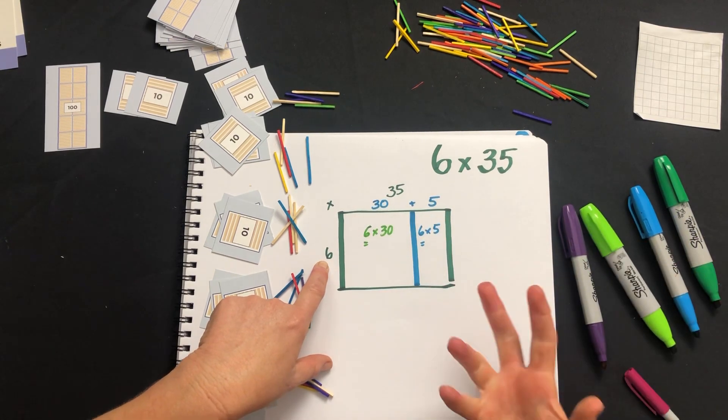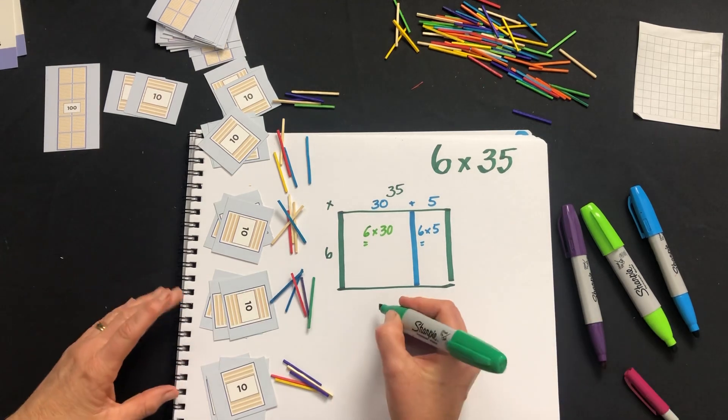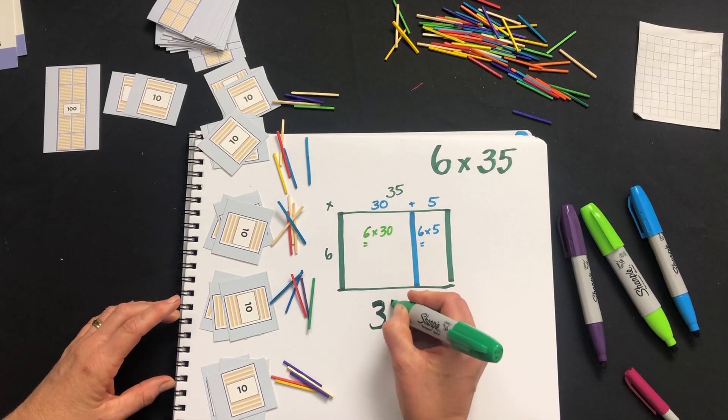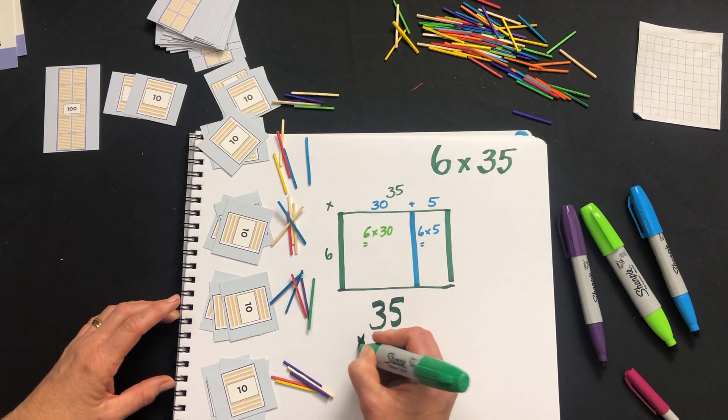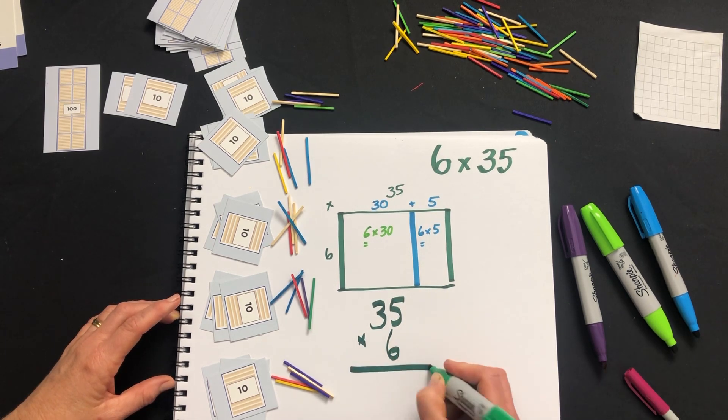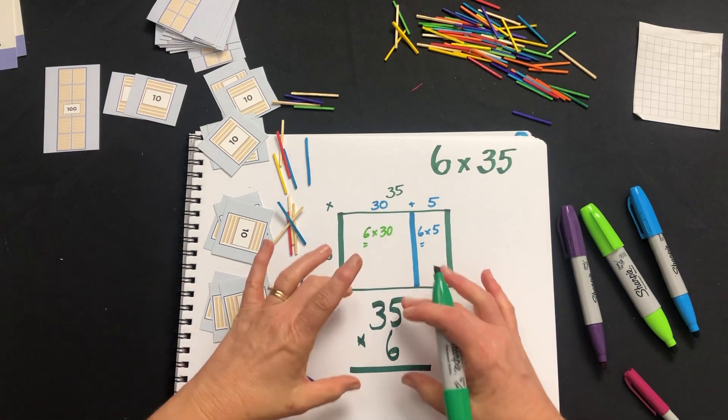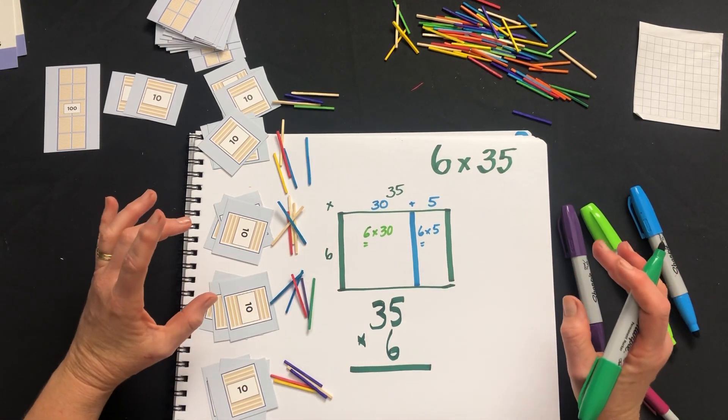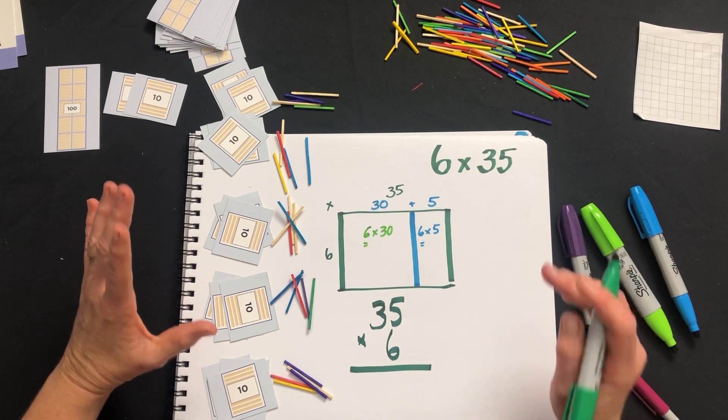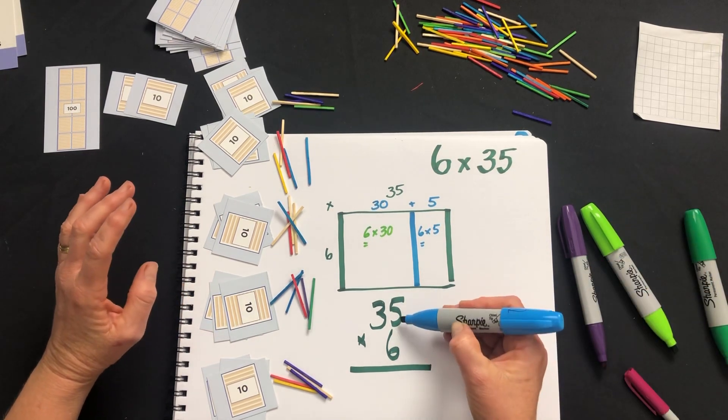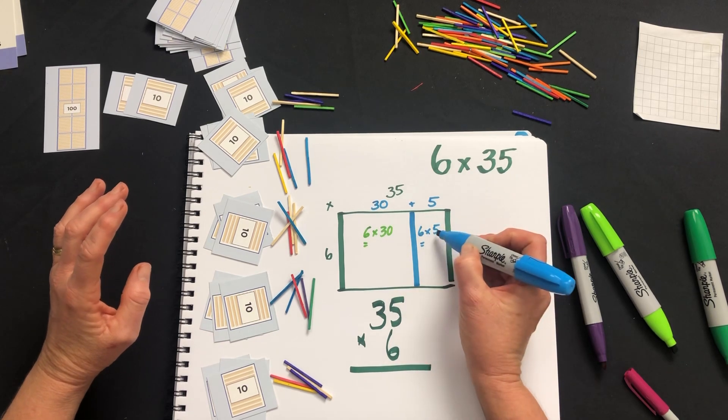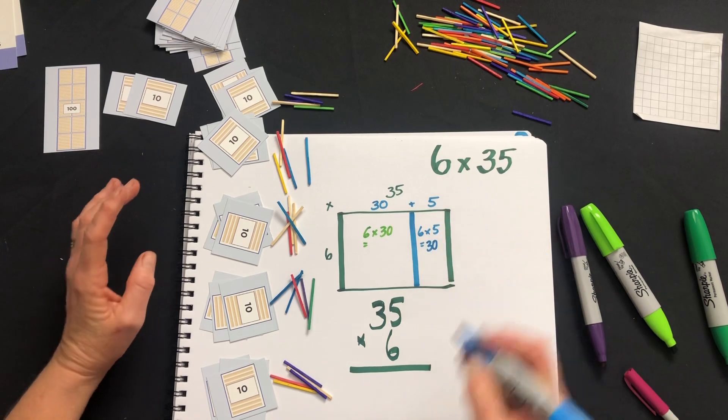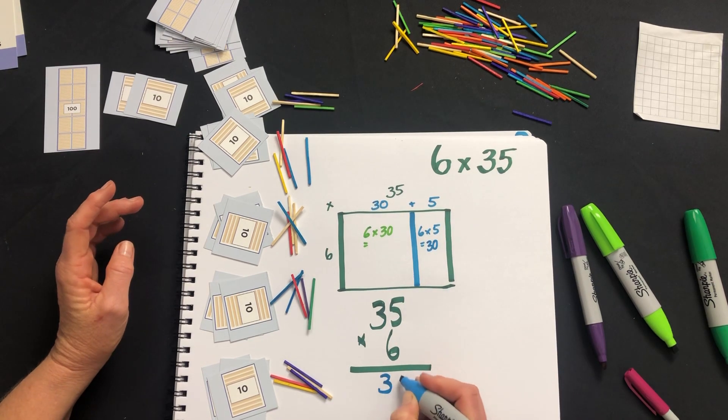Now if we set it out in the way that your students have most likely been shown in class, 35 times 6, they'll frequently be required to do this in one single step. We're going to take two steps to do this and I'll explain why as we do it. So it's 6 times 5 - six times five here which is 30, so we write down our 30.